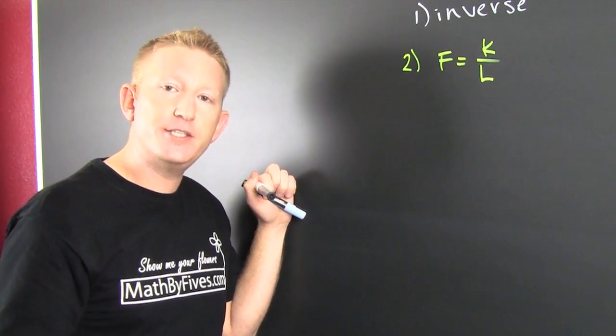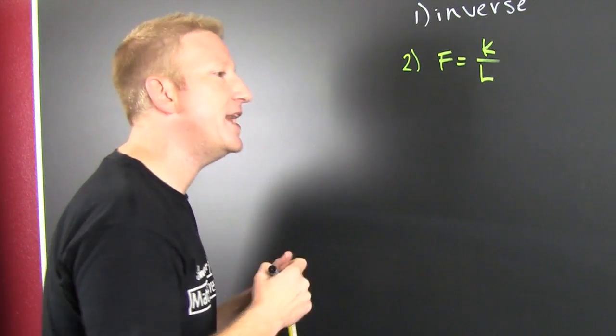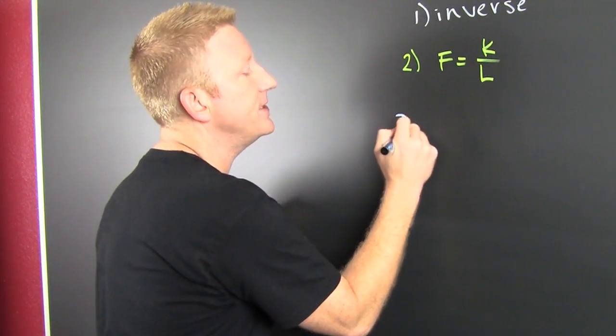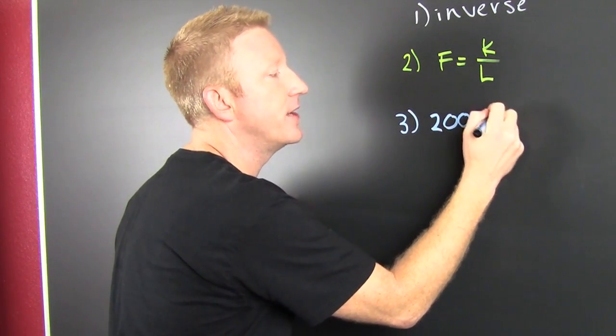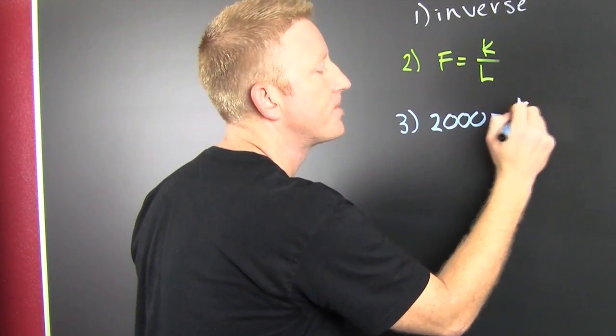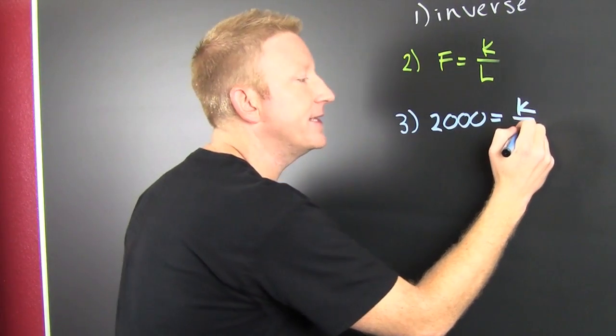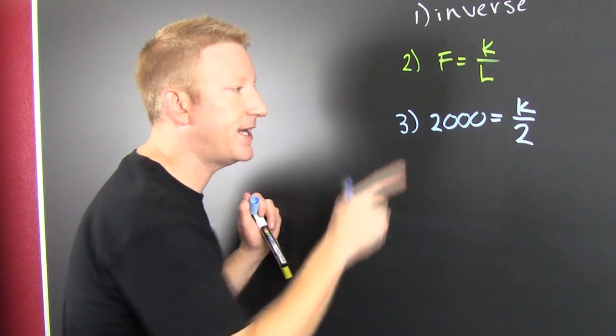So they say that 2,000 pounds of force is going to move this car when the length of the lever is 2 feet. Finish him. Find that k. Multiply both sides by 2 and k is gonna be 4,000.